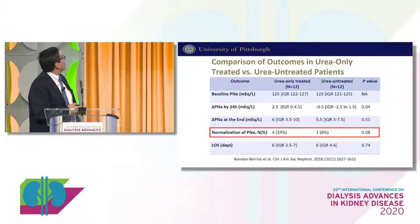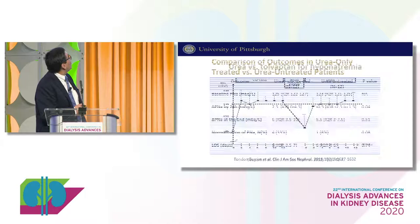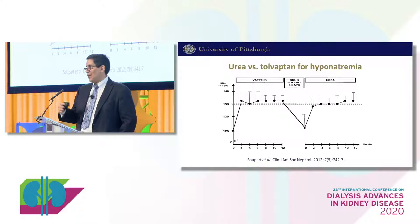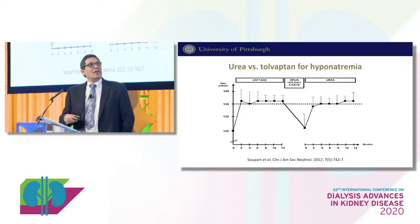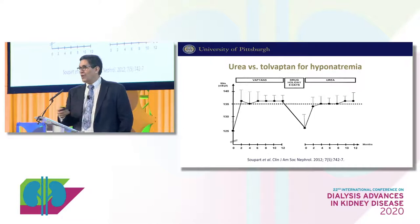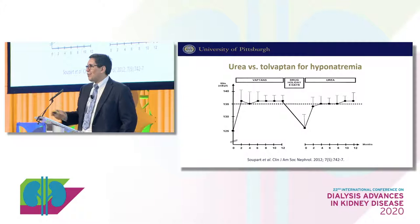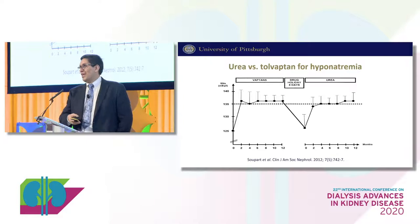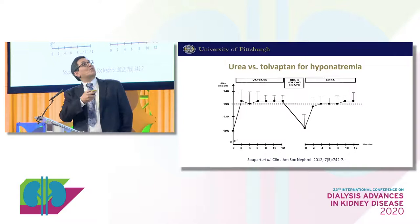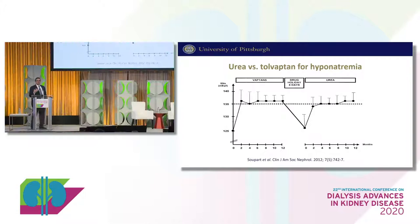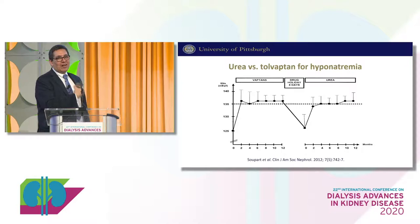Regarding urea compared to vaptans: the Belgian group did a study where patients already treated with vaptans had their vaptans stopped, became hyponatremic again after a washout of about 8 days, then were switched to urea. Sodium went up and stayed elevated for over a year without significant side effects. These studies suggest that vaptans and urea are equally effective, at least in this quasi-experimental design.